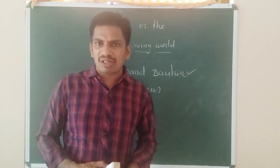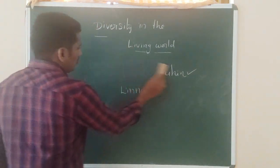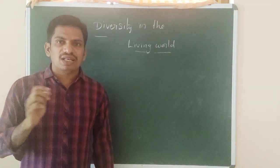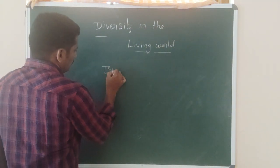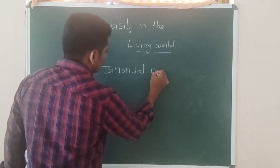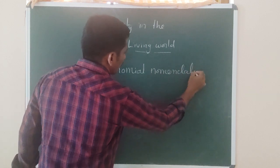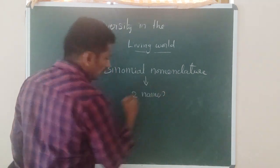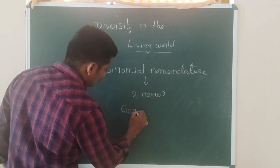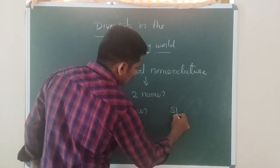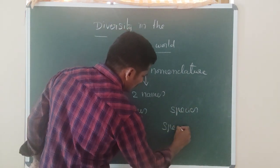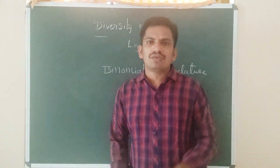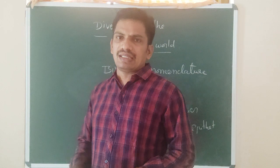Linnaeus popularized the binomial nomenclature. According to binomial nomenclature, every organism should possess two names. Every animal should have a two-name system. The first name is called the genus. The second name is called the species, or the specific epithet. Every animal should have two names — one is the genus name, and the other is the species name.